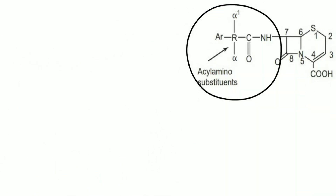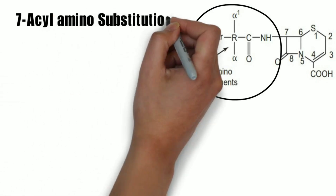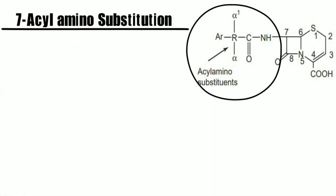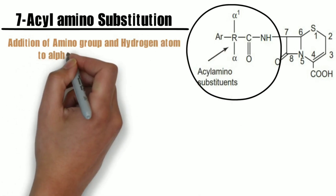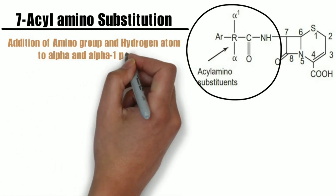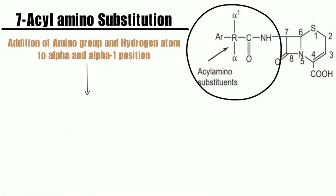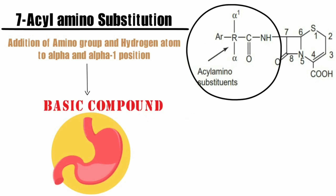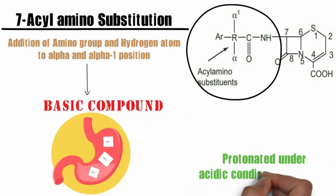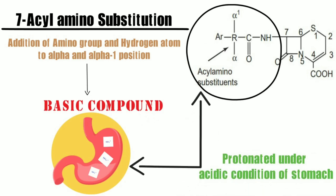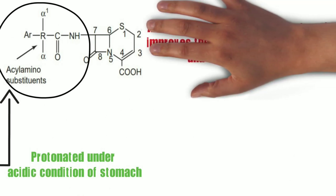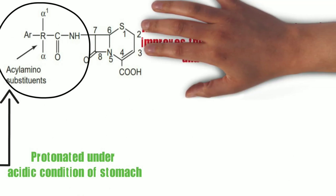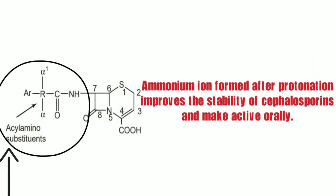Now we are going to observe the effect of modification of the 7-acylamino substituent on the activity. If we add an amino group and a hydrogen atom to the alpha position, it will produce a basic compound which will be protonated under the acidic conditions of the stomach. The ammonium ion formed improves the stability of cephalosporins and makes an orally active compound.